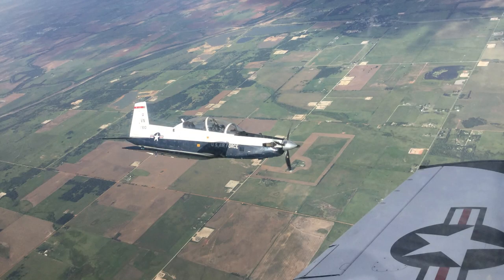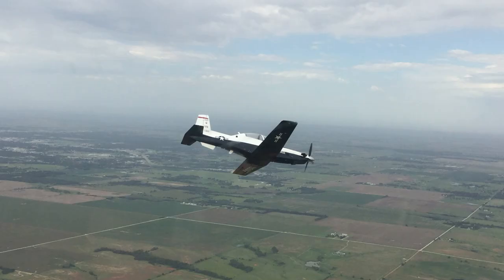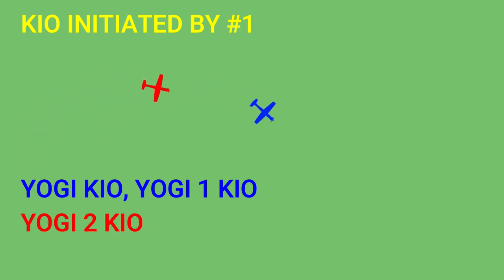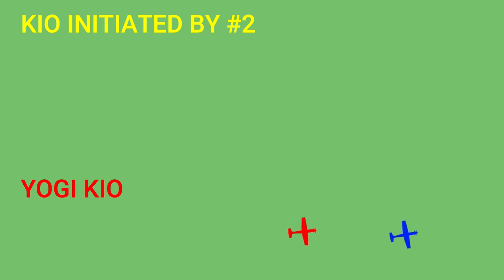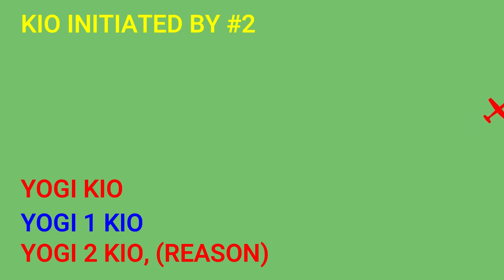Any aircraft in the formation can call a knock it off. The lead aircraft will remain predictable and limit maneuvering to non-aggressive bank and pitch angles, similar to how you should fly when in IMC. Once called, aircraft acknowledge the knock it off call in order, and then the aircraft that initiated the radio call states the reason. Example — lead initiates: 'Yogi knock it off.' — 'Yogi one knock it off.' — 'Yogi two knock it off.' — 'My picnic basket came unstowed.' Two initiates: 'Yogi knock it off.' — 'Yogi one knock it off.' — 'Yogi two knock it off.' — 'I'm choking on a fly.'